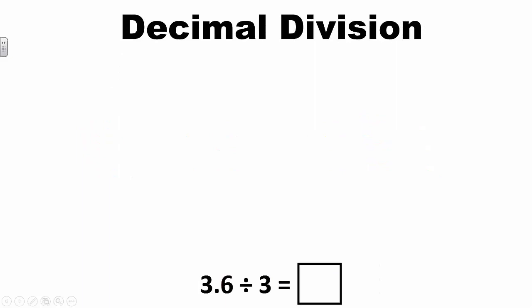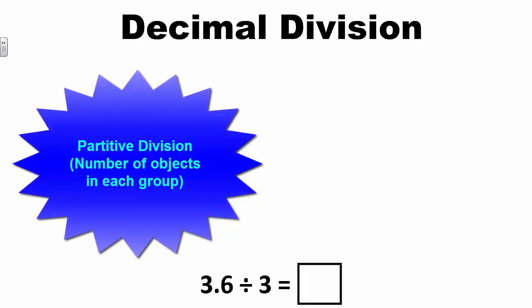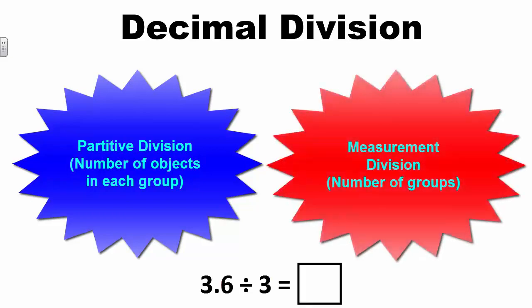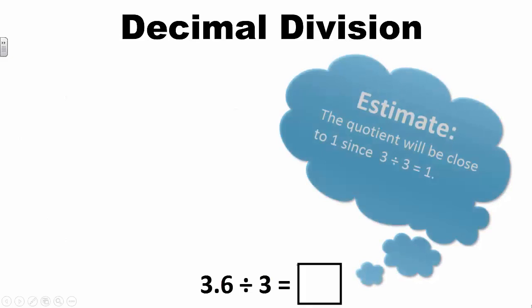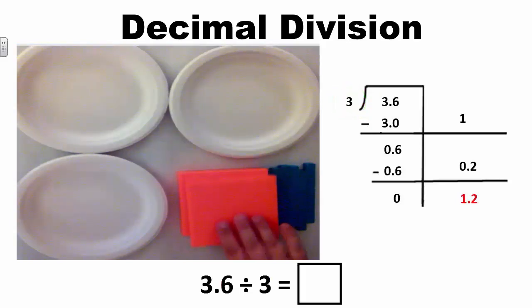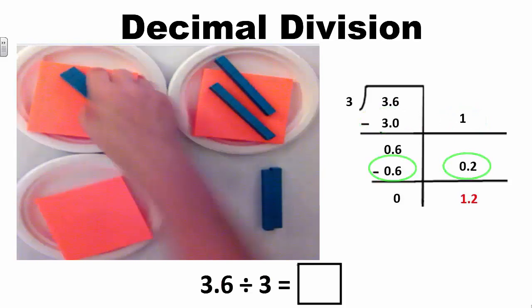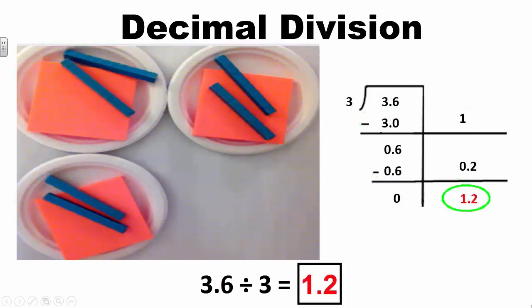Now let's look at an example of a division problem. Students have previously learned there are two types of division problems: partitive division, where students determine the number of objects in each group, and measurement division, where students determine the number of groups after dispersing objects into groups of a given size. Let's start with partitive division: 3 and 6 tenths divided by 3. My base 10 blocks represent my dividend of 3 and 6 tenths. Since I have a divisor of 3, I need 3 groups represented by paper plates. I disperse 3 and 6 tenths equally among each group. Each group contains 1 and 2 tenths blocks. Therefore, 3 and 6 tenths divided by 3 has a quotient of 1 and 2 tenths.